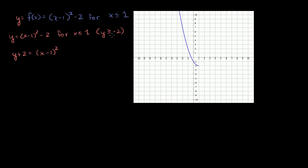Now we have y ≥ -2 and x ≤ 1. To solve for x, you might be tempted to just take the square root of both sides — and you wouldn't be completely wrong, but we have to be very careful here. We want the right side to just be (x - 1). That's our goal in taking the square root of both sides.